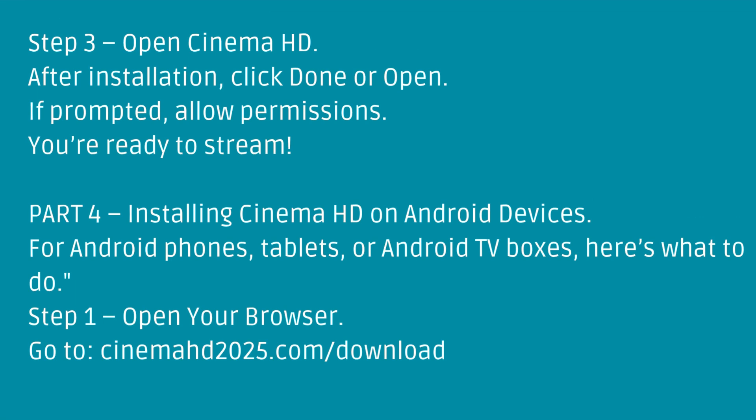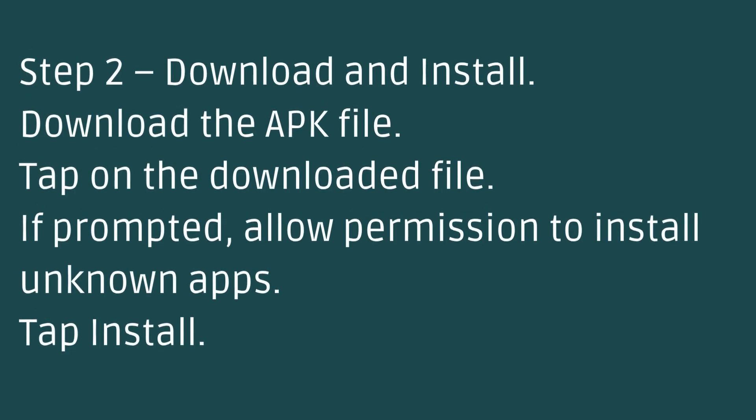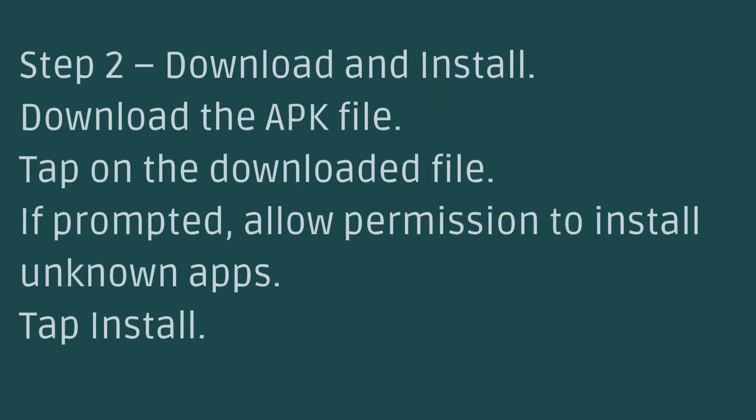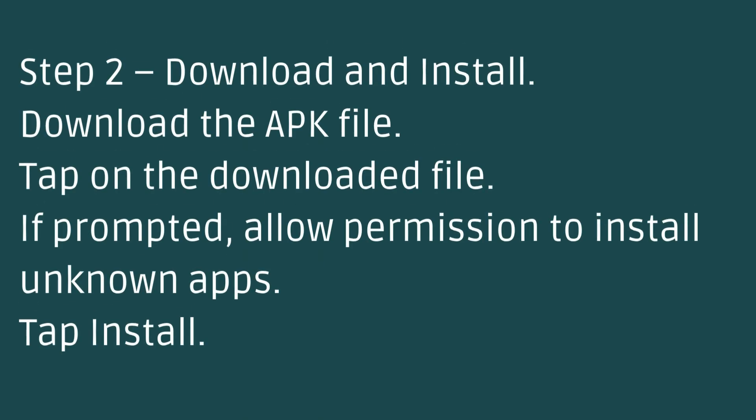Part 4: Installing Cinema HD on Android devices. For Android phones, tablets, or Android TV boxes, here's what to do. Step 1: Open your browser and go to the URL shown on screen. Step 2: Download the APK file, then tap on the downloaded file. If prompted, allow permission to install unknown apps, then tap Install.